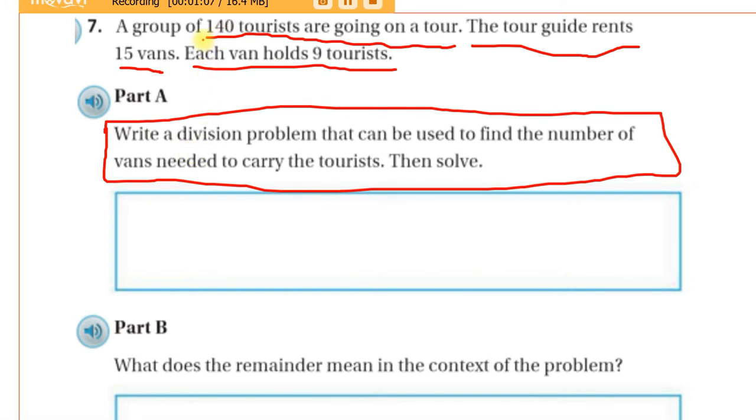So we're doing, there's only two numbers, well, there's three numbers to work with here. 140, 15, and 9. Write a division problem that can be used to find the number of vans needed. So, well, we already know how many rented, so we don't need this number. We're only dealing with 140 and 9, and we're dividing that.